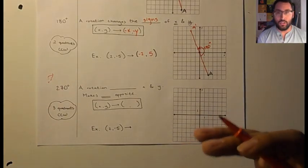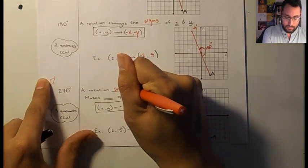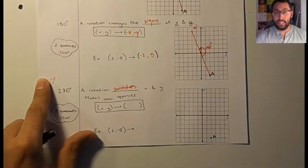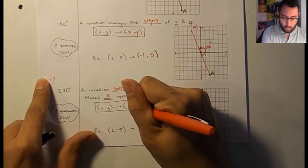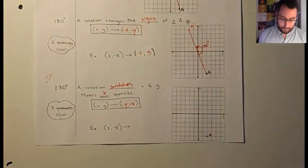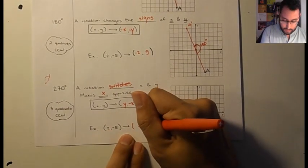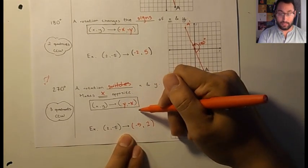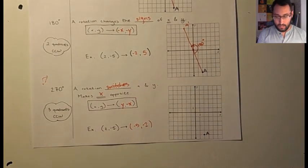And then for 270 degrees, a rotation again, switches X and Y. But in this case, you're not making Y the opposite. We're making X the opposite. So how this looks like, switch them. So this becomes Y and X, but make X the opposite and put a minus sign in front of it. So what does this look like? So we're going to switch them. I'm going to put negative five, positive two, but I have to make X the opposite. So right now X is two. What's the opposite of two? It's negative two.